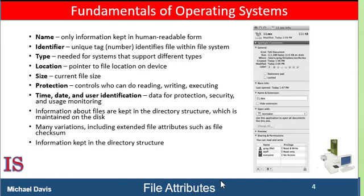The image on the right illustrates a file info window on the Mac OS that displays a file's attributes. Information about all files is kept in the directory structure, which resides on the same device as the files themselves. Usually a directory entry consists of the file's name and its unique identifier, which in turn locates the other file attributes. In a system with many file types, the size of the directory itself may be megabytes or even gigabytes. Because directories must match the volatility of files, like files they must be stored on the device and are usually brought into memory piecemeal as needed.